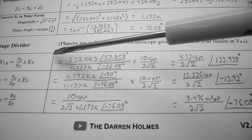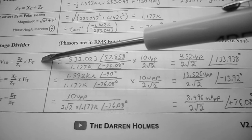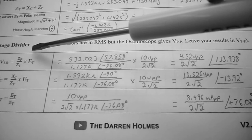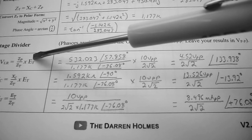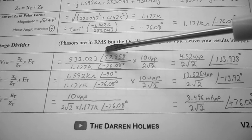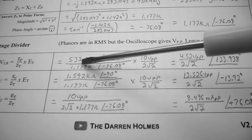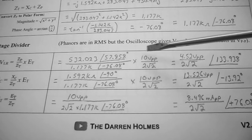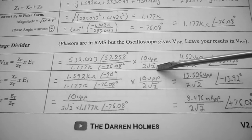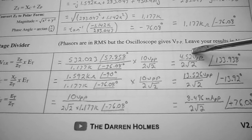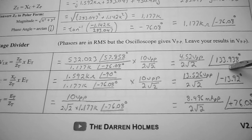To finish our pre-lab calculations, we need VLR — the voltage across the parallel branch. Using the voltage divider: Z parallel divided by Z total times the applied voltage. That's 532 at 57.8° divided by 1.177k at minus 76.08°, times 10 volts peak to peak divided by 2√2 to get RMS. That equals 4.52 volts peak to peak at an angle of 133.938 degrees.